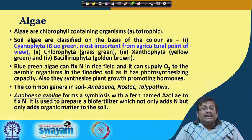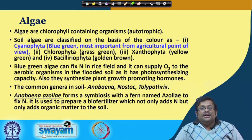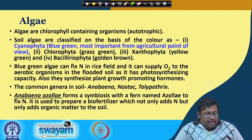Blue-green algae can fix nitrogen in rice fields and can supply oxygen to aerobic organisms in flooded soil, as they also have photosynthesizing capacity. They also synthesize plant growth-promoting hormones. Common genera in the soil are Anabaena, Nostoc, and Tolypothrix. Anabaena azollae is an important alga responsible for fixing atmospheric nitrogen in rice fields.